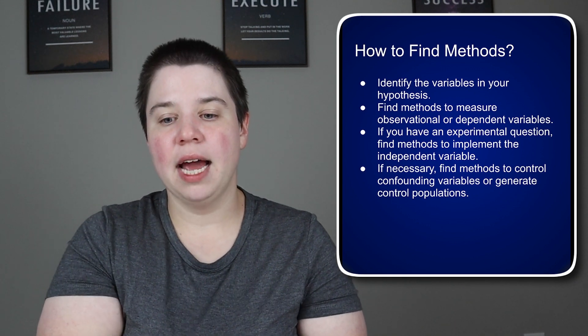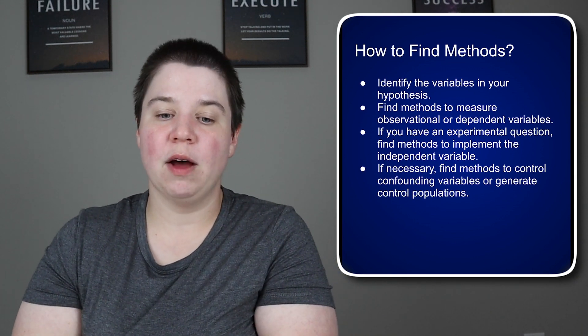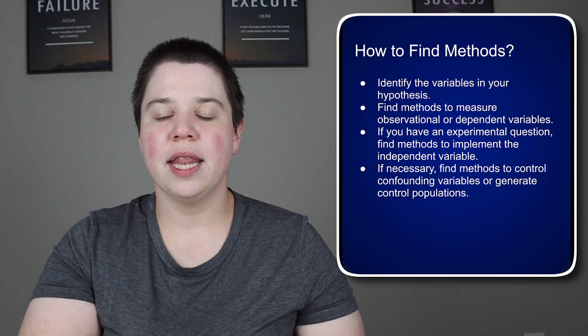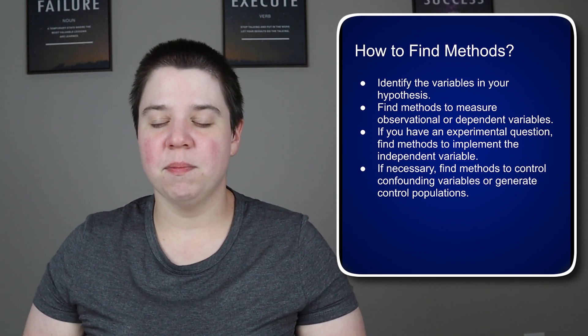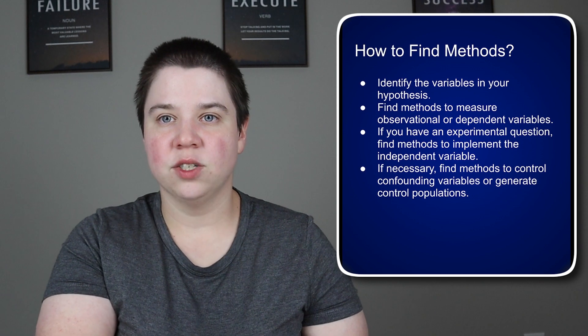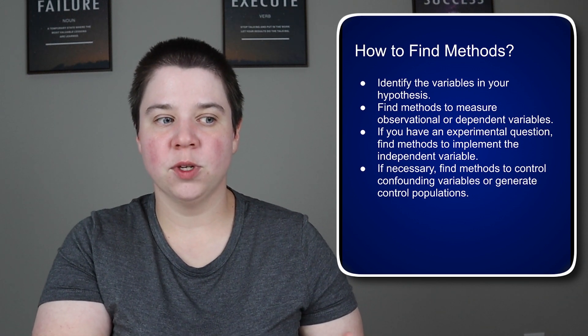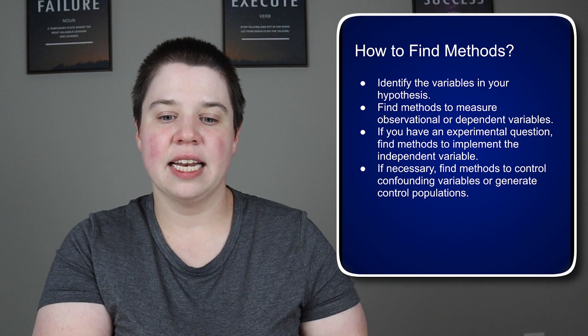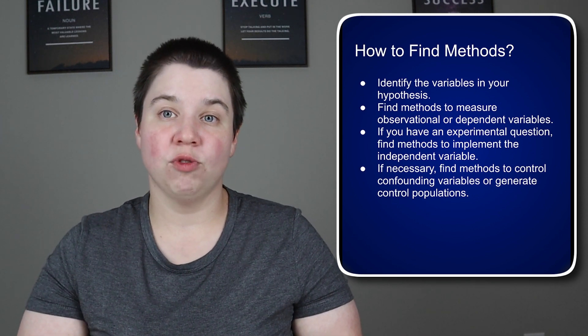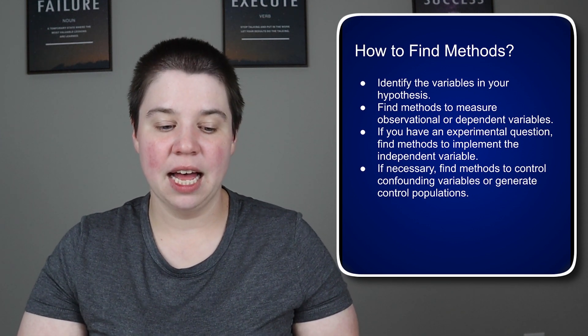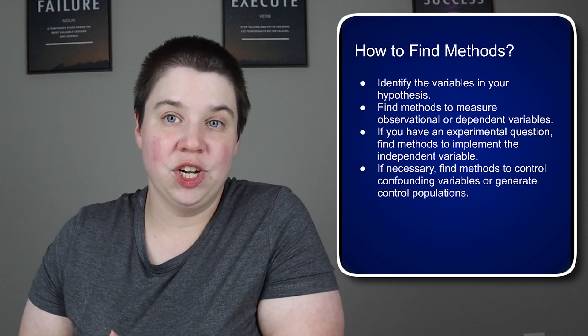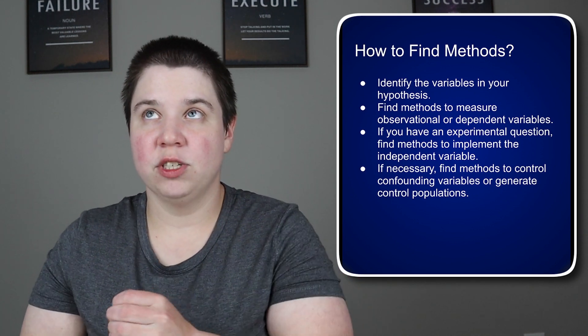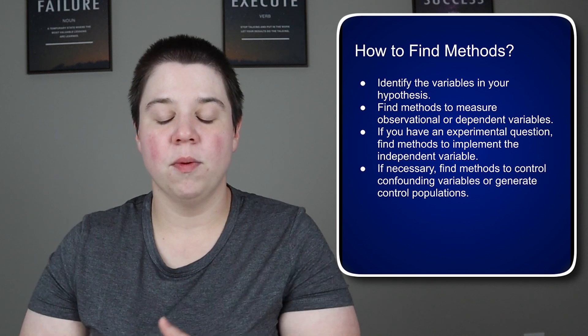And then if necessary, find methods to control confounding variables or generate control populations. So this isn't relevant to this specific question, but when I was in grad school, I had to write a proposal and my proposal was around breast cancer. And so one of the things that can be hard to do is to find control populations for breast cancer because there's not a lot of controlled tissue available. And so I was specifically looking at tissue and trying to compare the chemical markers.